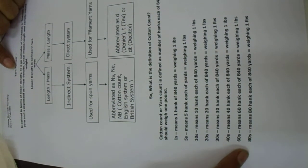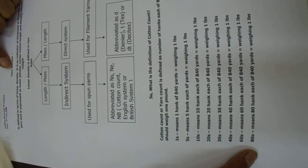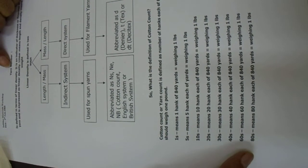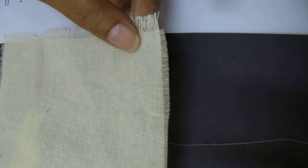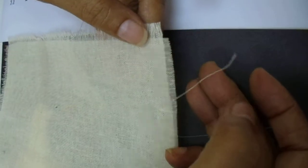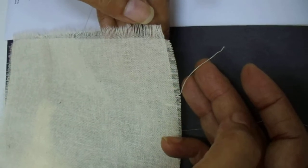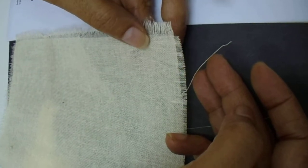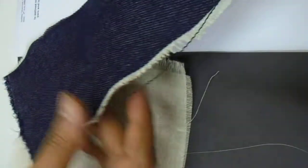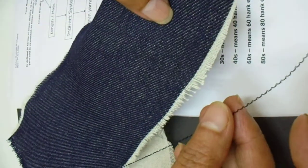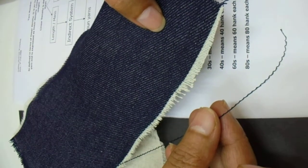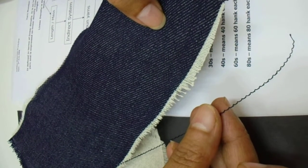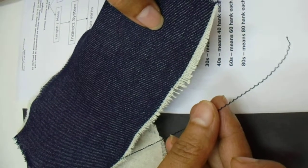In cotton count you can have 100s or 120s. The finer the yarn, the lighter the weight of the fabric. For example, a fabric with a yarn count of 20s has a corresponding diameter. Finer fabrics can go up to 80s, 100s, or 120s. In denim fabrics the yarn is much thicker, and those yarns can have a cotton count of 6s, 4s, or 10s.